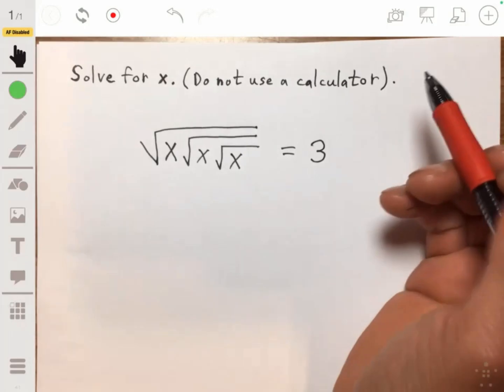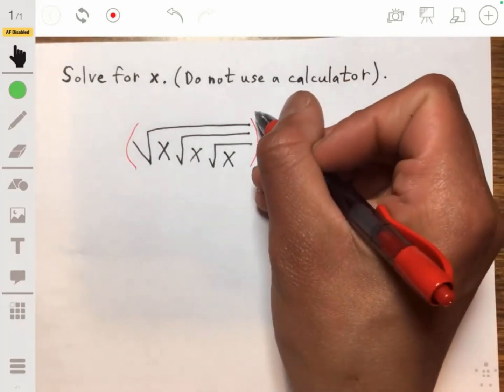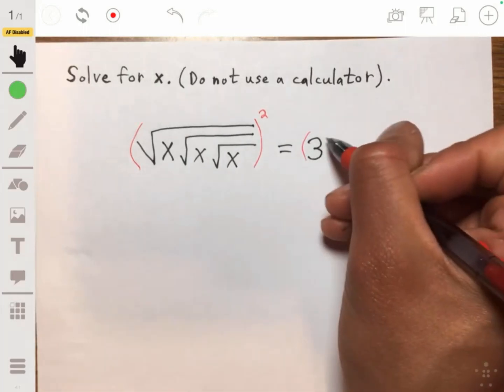All right, to solve this problem for x, we're going to start off by squaring both sides. We're going to raise both sides to the second power.